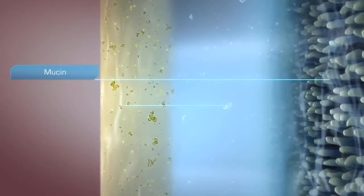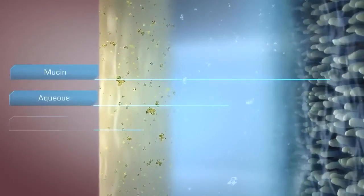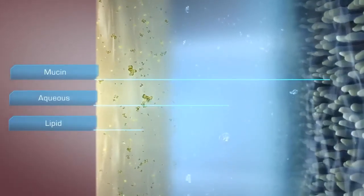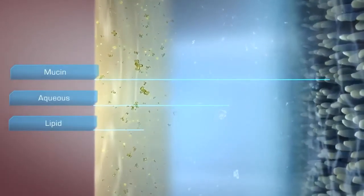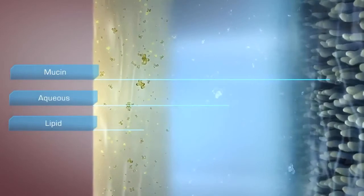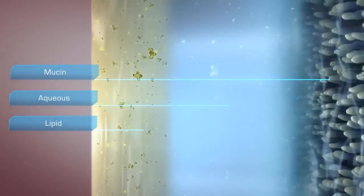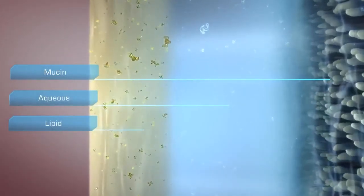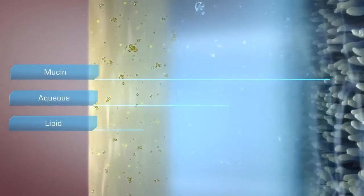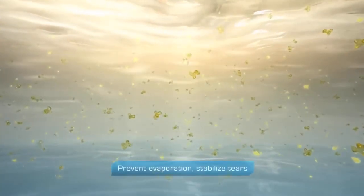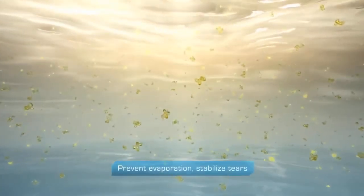The primary components of tears — mucin, aqueous, and lipid — combine to create a complex viscoelastic structure. This complex structure is responsible for a multitude of important functions. Lipids prevent evaporation, lubricate, and stabilize the tears.